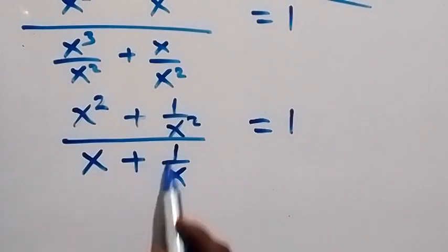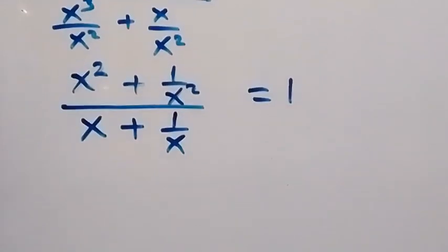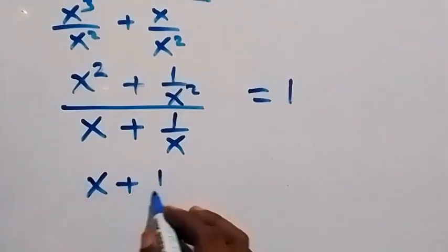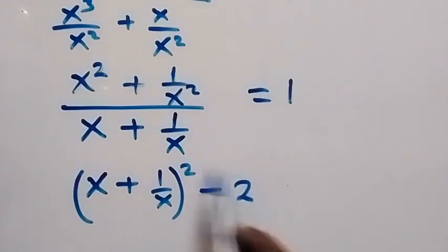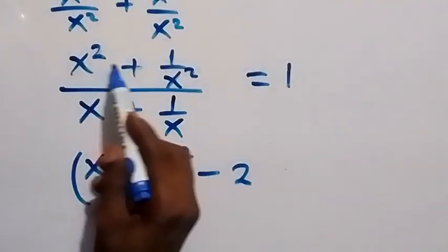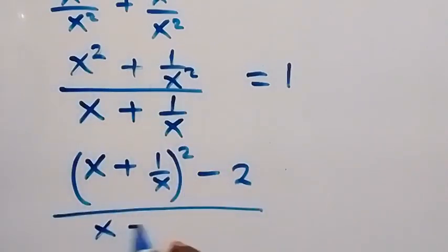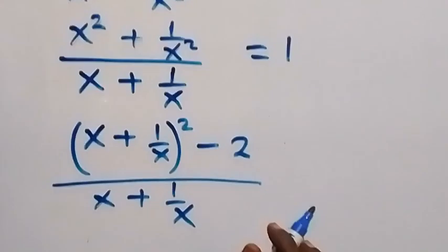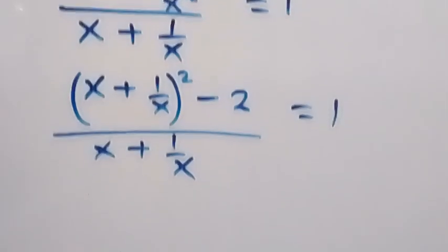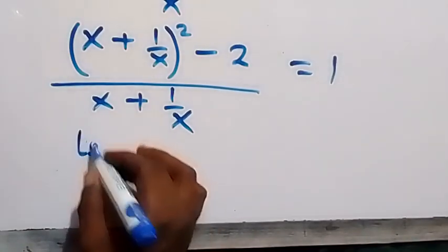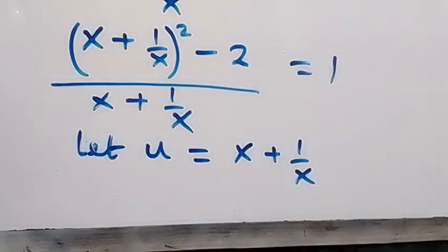In the next step, we have x plus 1 over x already present. We can write the numerator in terms of x plus 1 over x as: x plus 1 over x, all squared, minus 2. This is the same as x squared plus 1 over x squared, divided by x plus 1 over x, equals 1. So x plus 1 over x is common. Let the letter u equal x plus 1 over x.